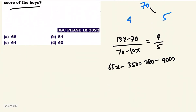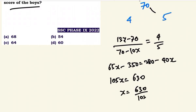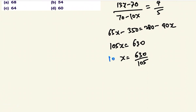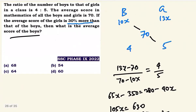So 40x on the left-hand side: 105x is equal to 630. So x is equal to 630 divided by 105. The average score of the boys is 10x, and since x equals 6, 10x equals 60. Average score of the boys is 60.